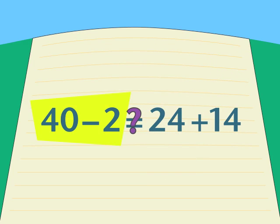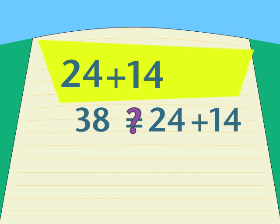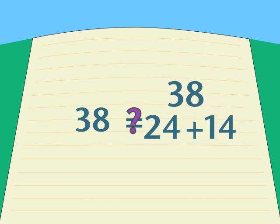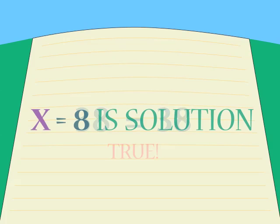Next, we simplify the arithmetic until we find that we're right. x equals 8.